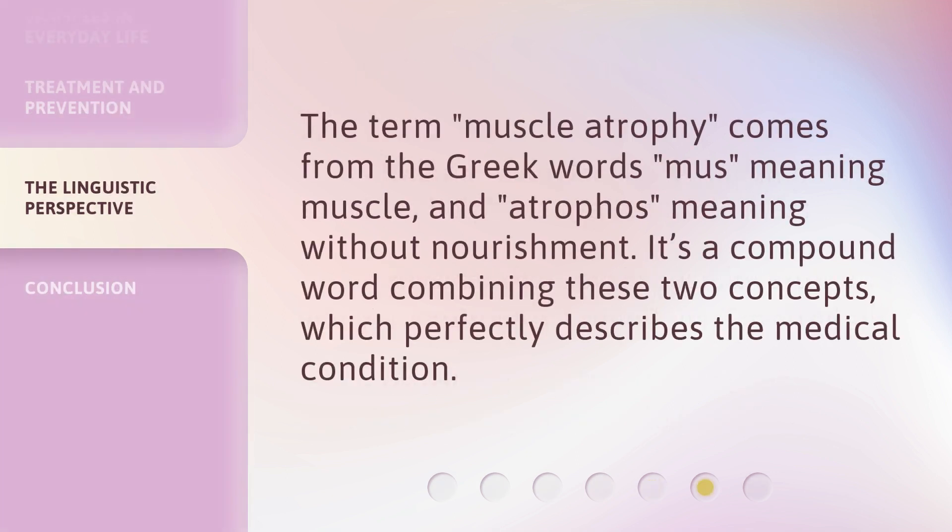The term 'muscle atrophy' comes from the Greek words 'mus', meaning muscle, and 'atrophos', meaning without nourishment. It's a compound word combining these two concepts, which perfectly describes the medical condition.